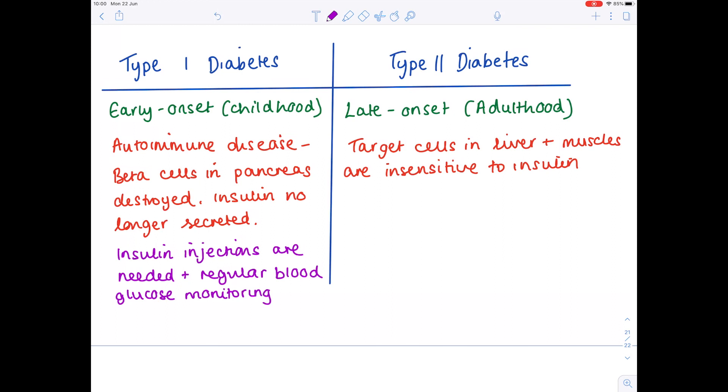Now because the problem with type 2 diabetes is that the target cells no longer respond to insulin clearly injecting more insulin is going to have no effect so instead you have to try and get your body more sensitive and the way in which you do that is by controlling your diet having healthier food options and doing more exercise.